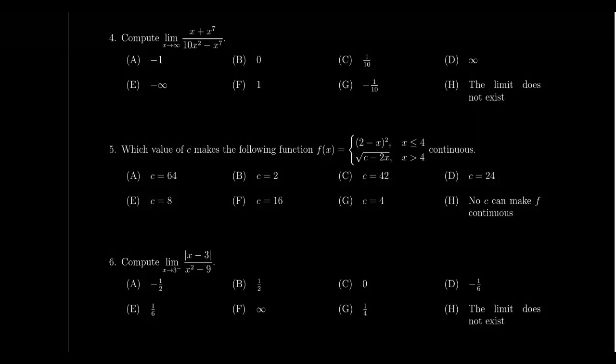Question number four is going to involve a limit as x approaches positive or negative infinity — the end behavior of the graph. This is exactly the type of thing from lectures 14 and 15. For rational functions, taking the limit as x approaches infinity or negative infinity is fairly straightforward. But these questions could be of more moderate difficulty — when square roots get involved, things get trickier, especially as you approach negative infinity. We also did limits with exponential expressions, like (x + e^x) / (10x² − e^x). Be prepared to compute limits as x approaches positive or negative infinity.